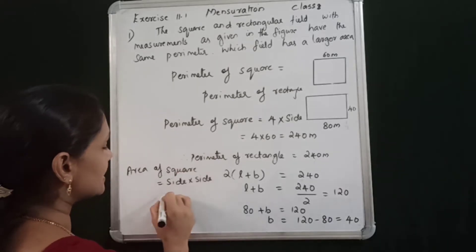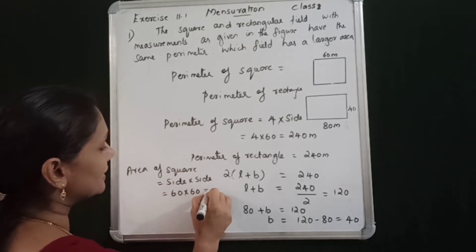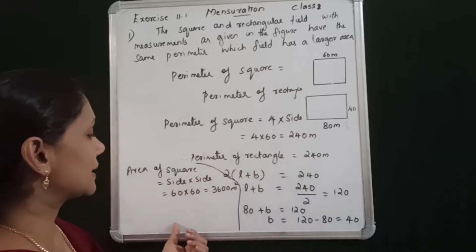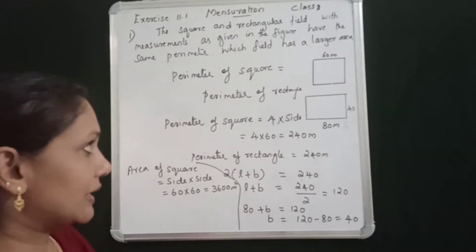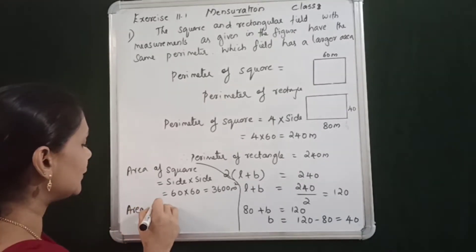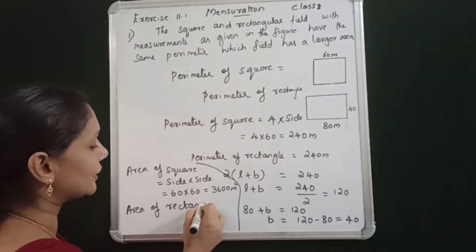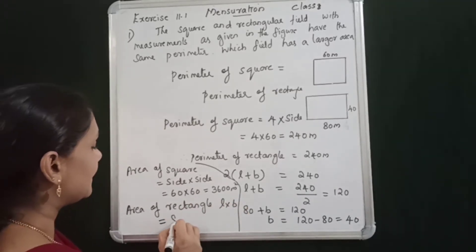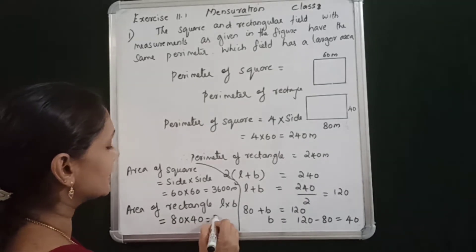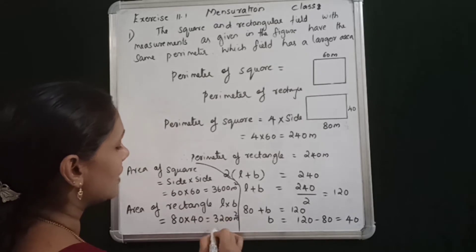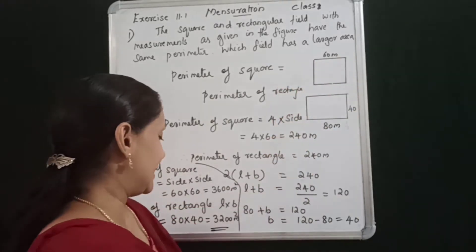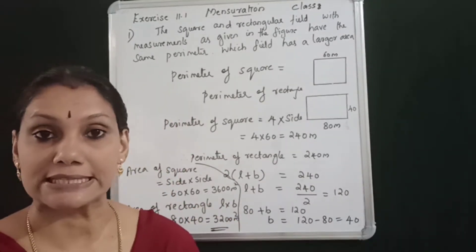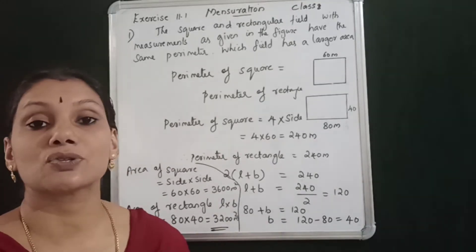Side to side: 3,600 m². The square area is 3,600 m². Area of rectangle is L into B. L is 80, B is 40. Area of rectangle is 80 into 40 equals 3,200 m². Which shape has larger area? The square has larger area: 3,600 m² versus rectangle 3,200 m².